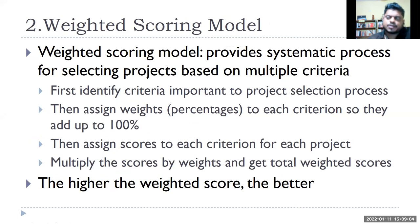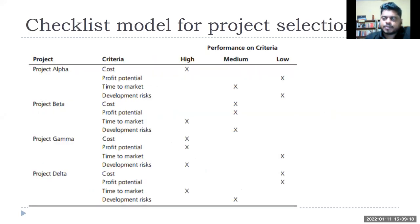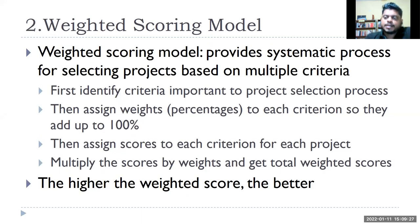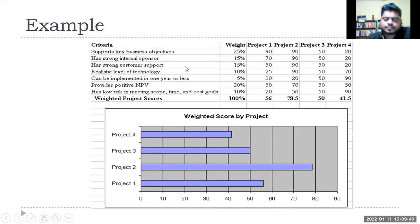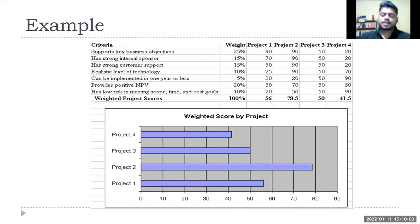The weighted scoring model differs from the checklist model only in that you now assign weights to those criteria — and that needs to be decided in the beginning. In the weighted scoring model you choose criteria and also assign weightages to them. For example, criteria might include: whether the project supports key business objectives, whether it has a strong internal sponsor — which is actually a very important parameter, since most projects fail without an internal sponsor who supports the project from top management level.